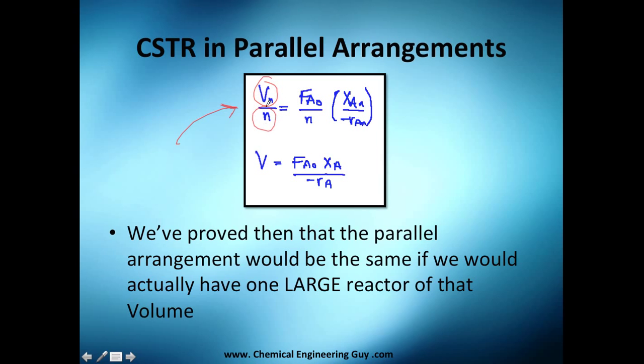That's why I'm telling you, it's boring. You will get this master equation: the volume of that reactor divided by the number of reactors equals the volumetric flow rate at the inlet of that small reactor divided by the number of reactors, times the conversion which is the same for every reactor. At the end you will have the same conversion even though you mix them. So we proved that the parallel arrangement will be the same as if we actually have one large reactor of that total volume.